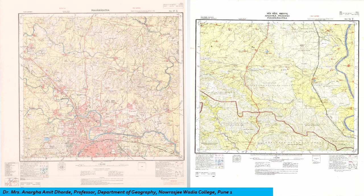These are two different topographical maps representing different areas in India. Towards your left you are having parts of Maharashtra — basically the northern part of Pune city — and towards the right you are having parts of Maharashtra state and Andhra Pradesh state. This is the inner part of the toposheet where the map details are, but there is a lot of information available on the upper and lower portions of the toposheet as well.